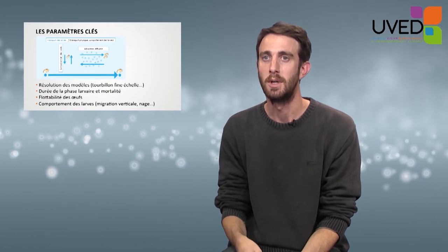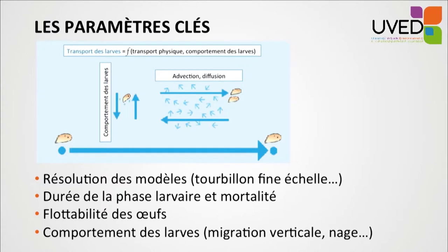The key parameters are model resolution — fine-scale vortexes provide better representation than large current boxes. We also need to learn about larval behavior, the duration of the larval phase (how long larvae remain in a pelagic state — maybe weeks, maybe years), egg floatability (whether eggs are dense or swim near the surface), and finally larval behavior. Sometimes larvae have a diurnal behavior: floating on the surface at night and going deeper during the day, drifting with different currents depending on the time of day.